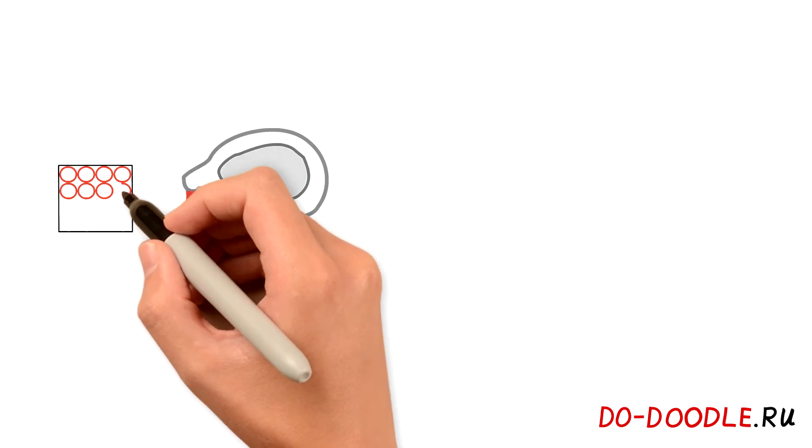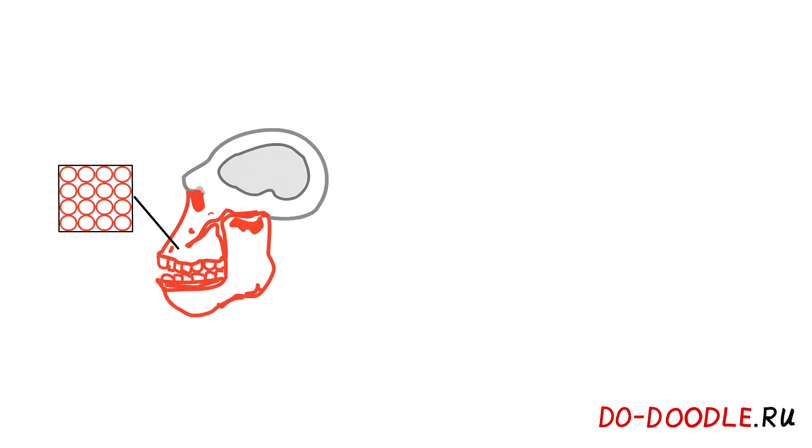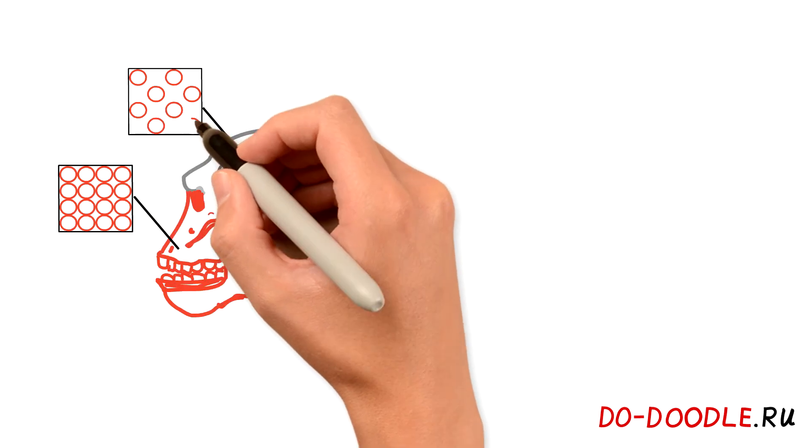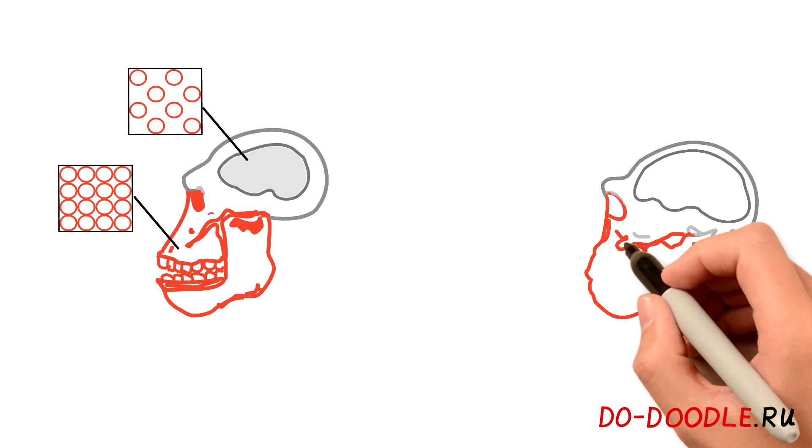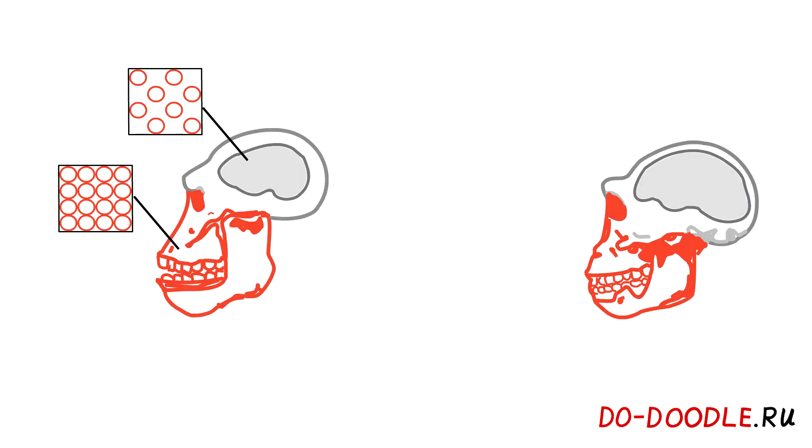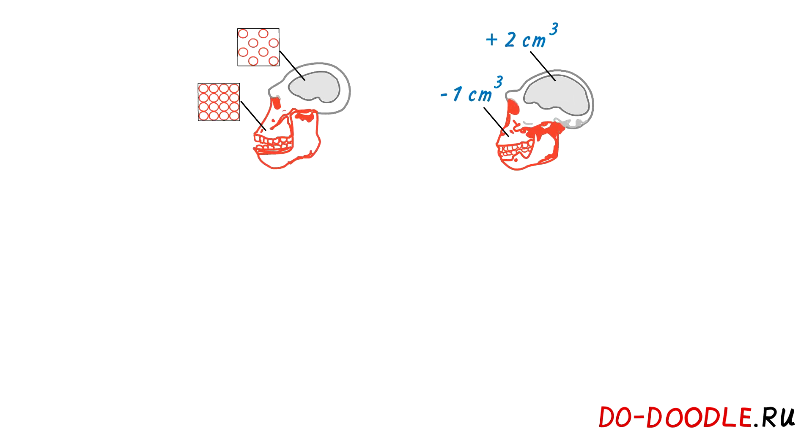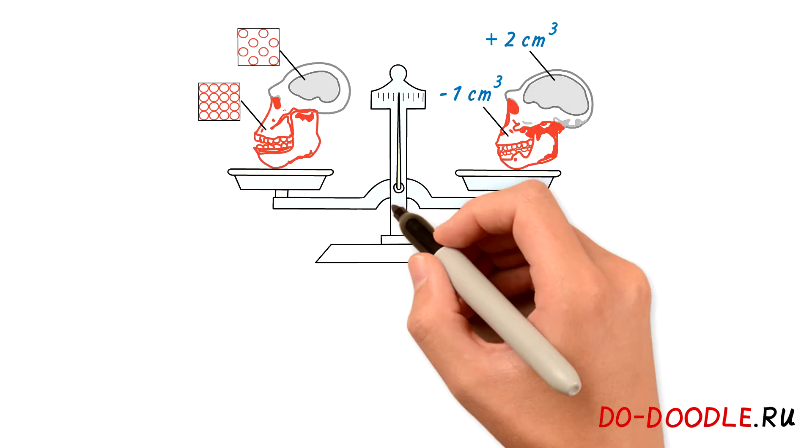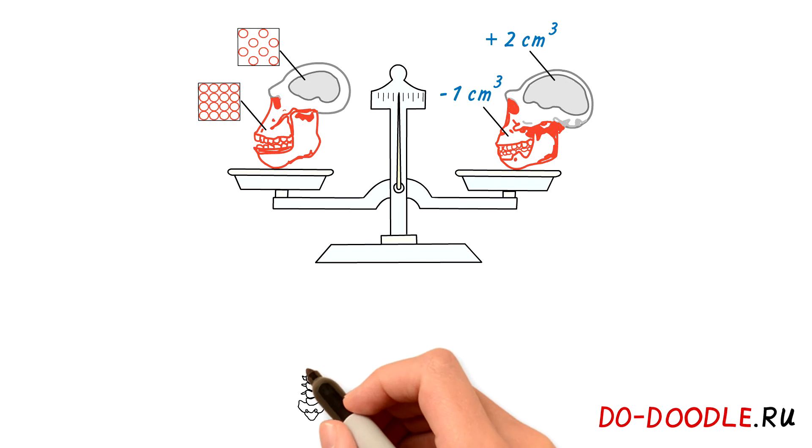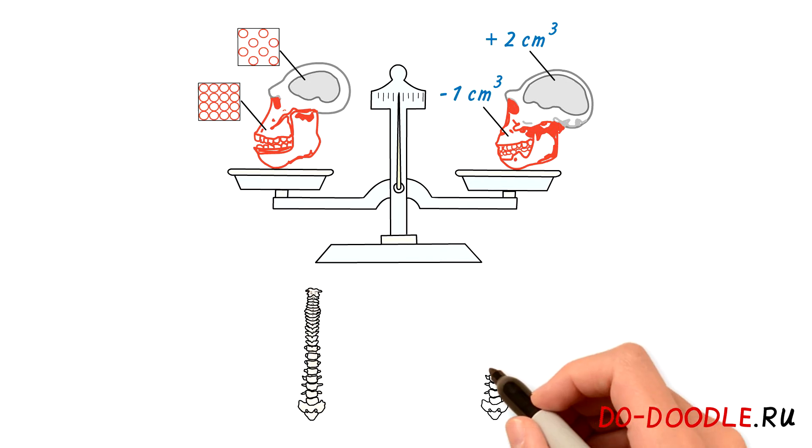The relative density of teeth, bones and muscles is two times higher than the relative density of brain. As a result, the reduction of the chewing system by one cubic centimeter allows to increase the brain volume by two cubic centimeters, while keeping the overall mass of one's head the same. And that is important, because both the height and the spine size stayed the same.